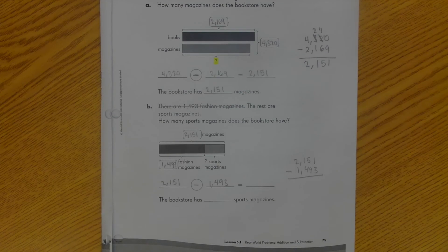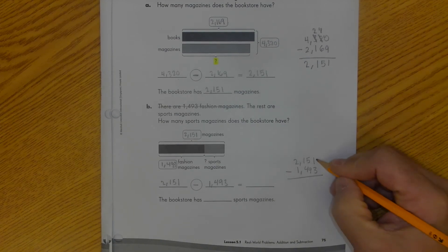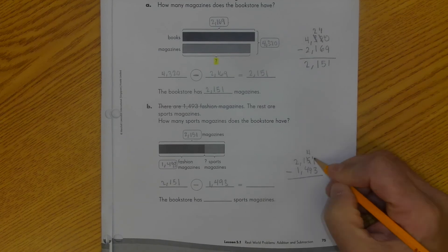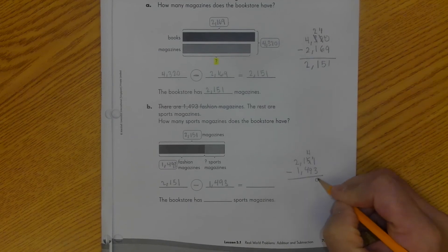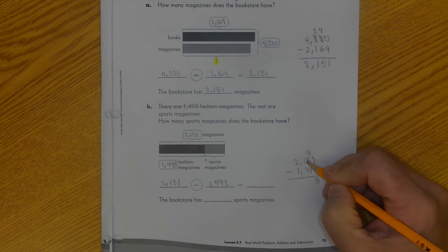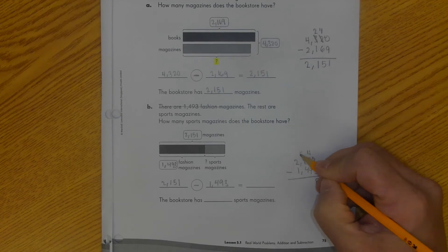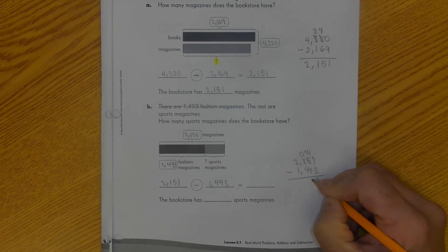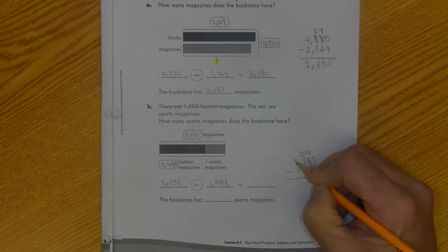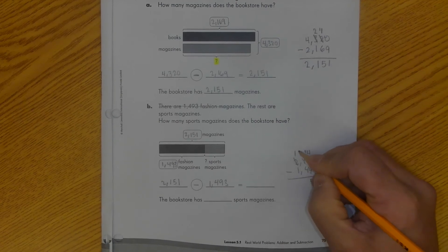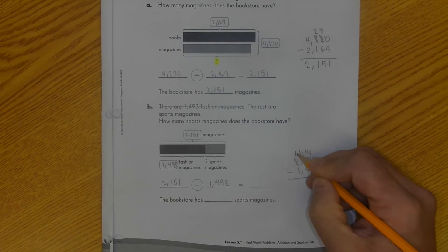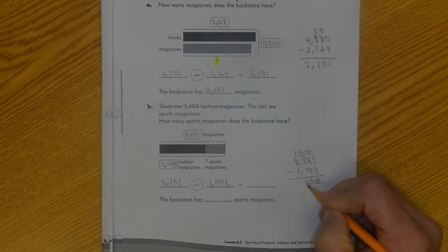And I'm going to solve my problem. I know I can't take 3 from 1, so I have to regroup. 11 minus 3 is 8. I can't take 9 from 4, so I have to regroup. This is going to turn into a 0. 14 minus 9 is 5. I can't take 4 from 0, so I'm going to regroup here. 10 minus 4 is 6. 1 minus 1 is 0. And I don't have to put that 0 in. So I know my answer is 658.